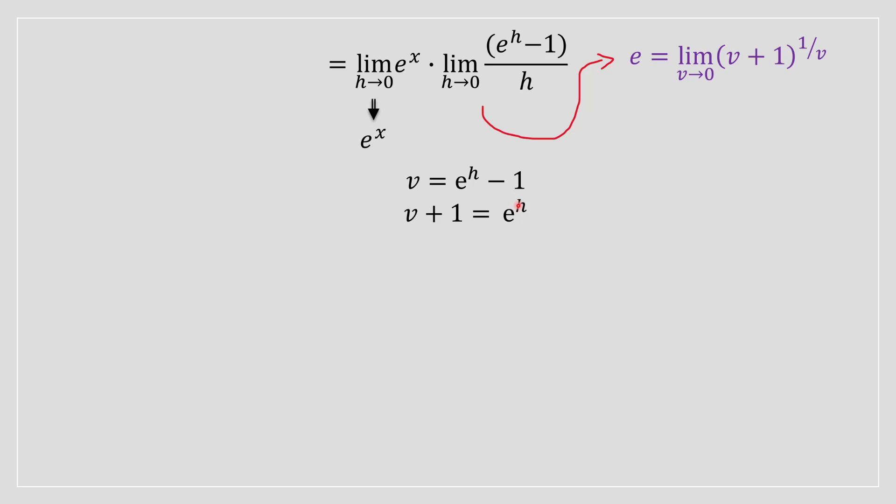What we're going to have to do is solve this for h. Once we do that, we take the ln on both sides and we obtain ln v plus 1 is equal to h. We're going to do this replacement into this limit right over here. We're just going to replace the h term with ln v plus 1.